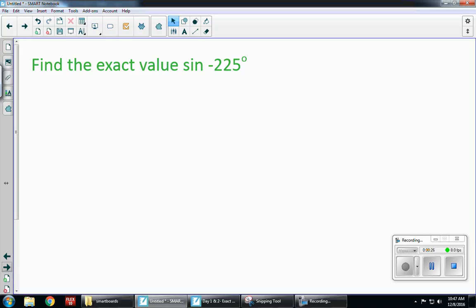So find the exact value of sine negative 225. I don't work with negative angles, so I want to find its coterminal angle. In order to do that, I'm going to add 360 because you're adding a complete circle, so you'll end up back in the same position.